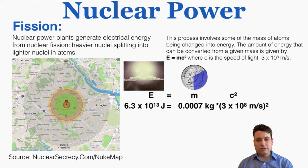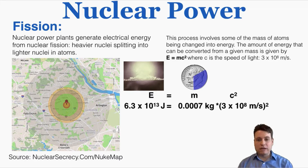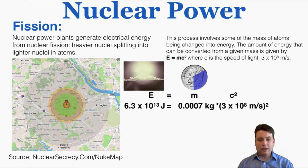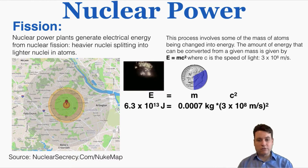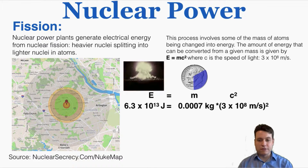E equals mc squared is a remarkably simple equation to use. It says that if you convert mass into energy, this is exactly how much energy you'll get from that much mass. It's a really gigantic amount of energy because the speed of light is so large and we're squaring it. To show how large it is: the Trinity tests, the first ever atomic bomb tests — the mass converted into the energy of that explosion was about a third of a dime, 0.0007 kilograms.